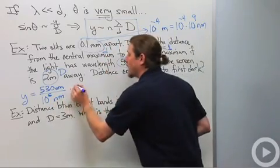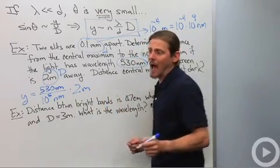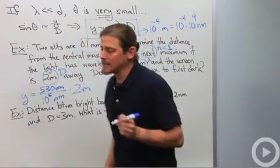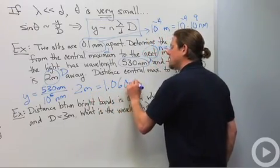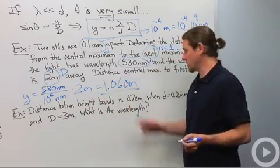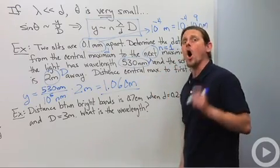So that's lambda over d. And then we got times 2 meters. And if you go through this analysis, what you'll find is that it's 1.06 centimeters to the next maximum from the central maximum.